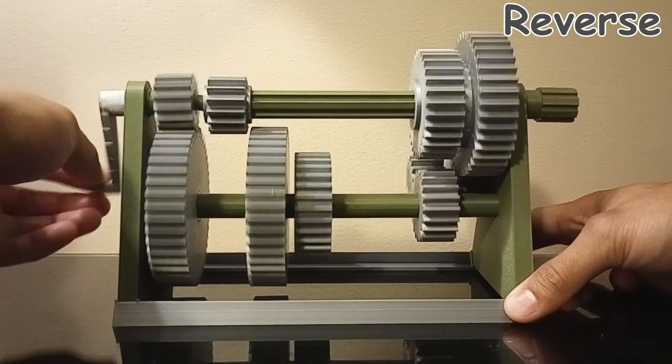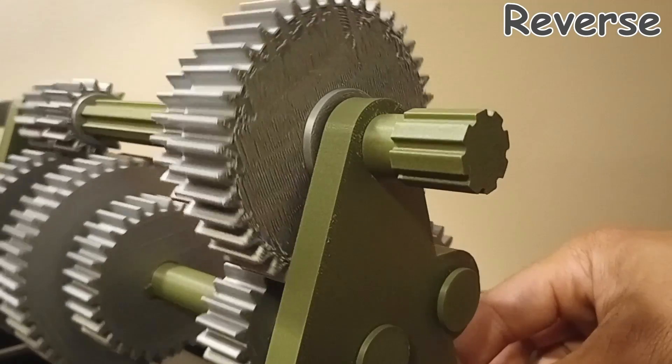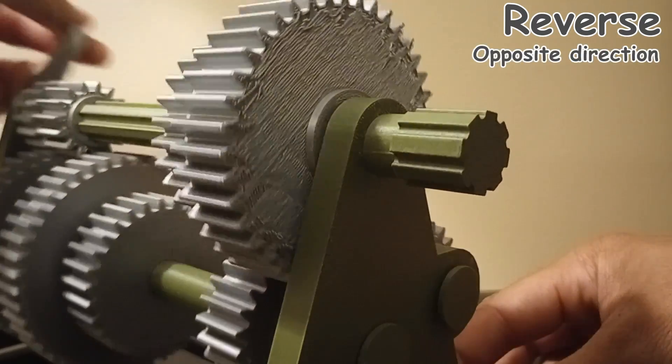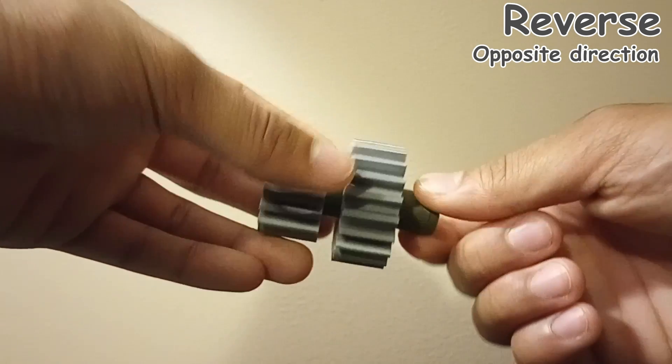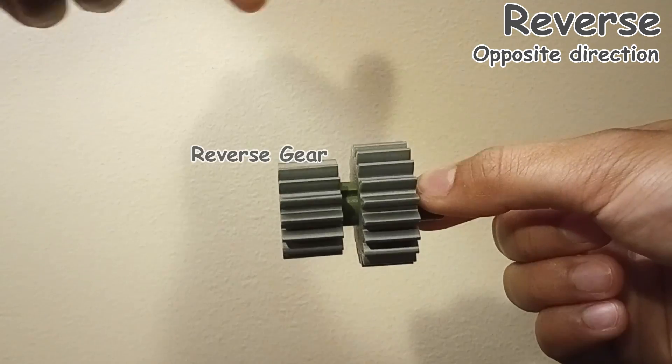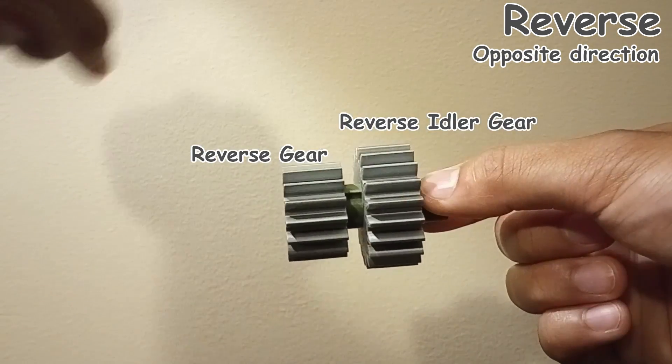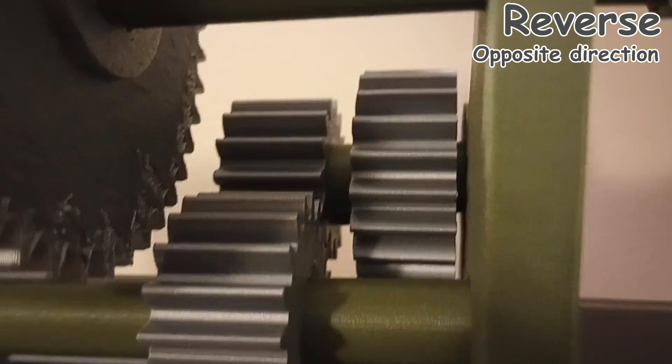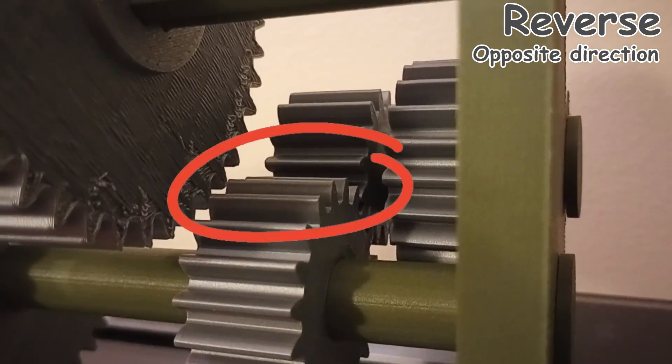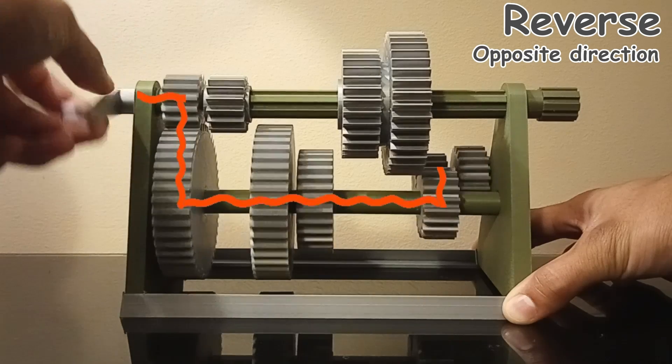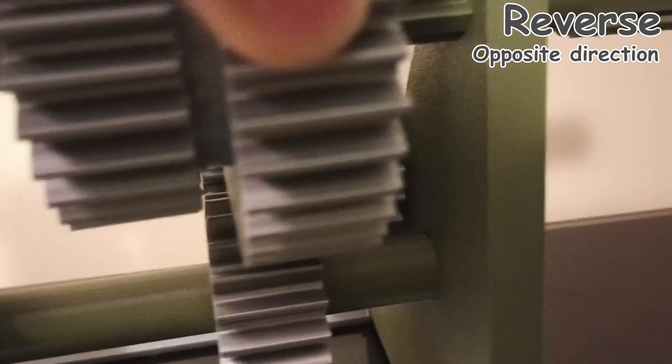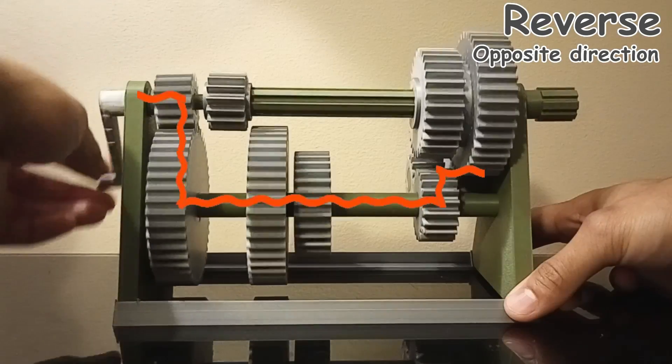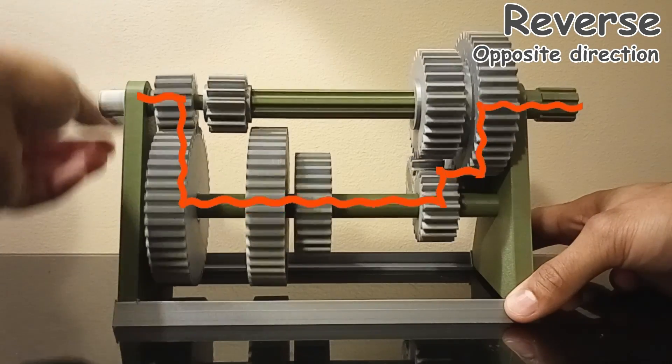Reverse. In this case, the main shaft rotates in the direction opposite to the clutch shaft. This happens because the short shaft in the back here has two gears, the reverse gear and the reverse idler gear. The reverse gear meshes with the countershaft gear in order to connect the counter section and the reverse section. Then the purpose of the reverse idler gear is to connect the reverse section to the output section when their gears mesh.